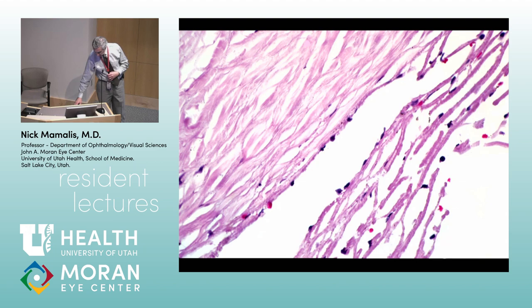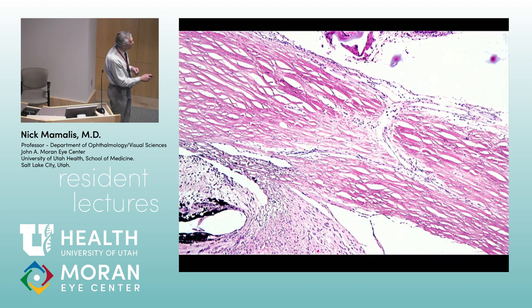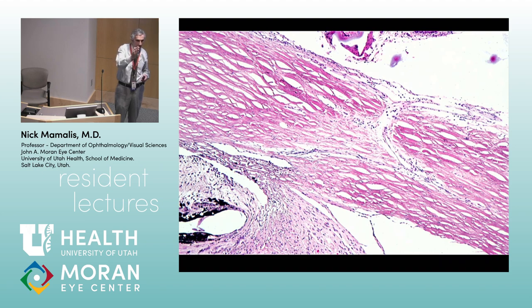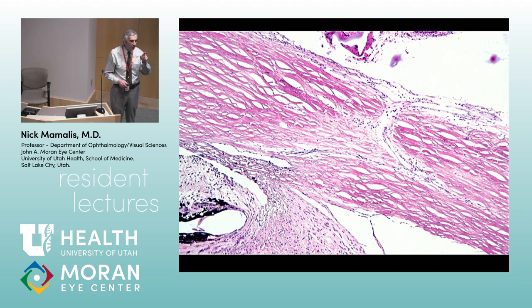Here's a close-up of Schlemm's Canal and the juxtacanalicular tissue showing Schlemm's Canal and an aqueous vein draining out onto the surface in the episcleral area. Your assignment: when you're in the clinic doing a slit lamp exam, take an extra 10 seconds and look at the limbus, then go about a millimeter from the limbus and focus down on those vessels. You can see the aqueous veins because there's not only blood but also aqueous fluid, which is clear — so you get what's called boxcarring. You'll see little RBCs with clear fluid in between them.